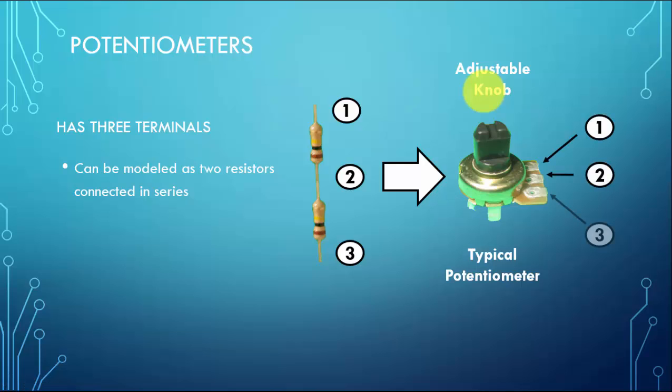With the model, we have 1 and 3, and that's usually fixed. So no matter what you do with the knob, you're going to have a fixed resistor value between points 1 and 3.